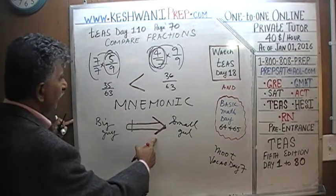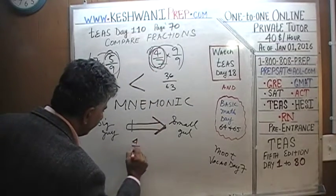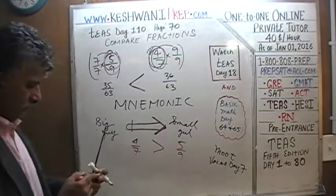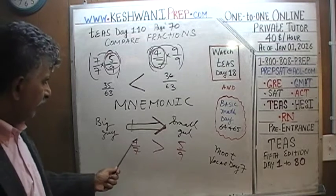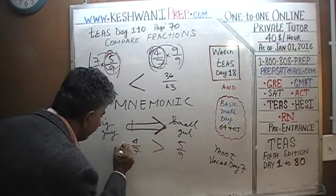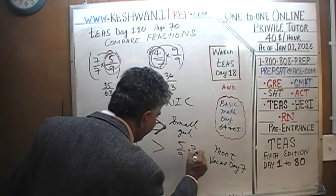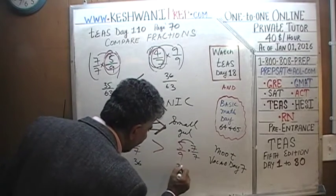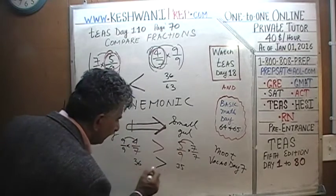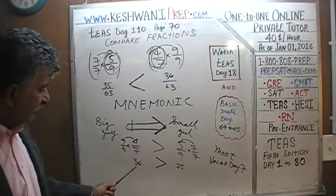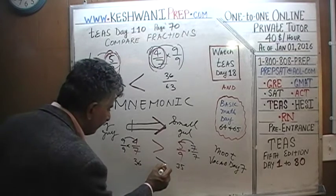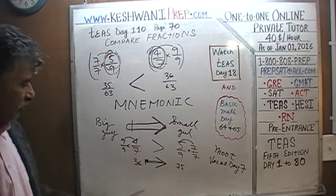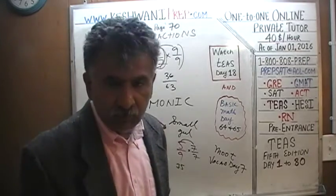So if you write four-sevenths, which gave us 36, is bigger than five-ninths, which gave us 35 — the symbol points from the larger number toward the smaller number. Thirty-six is being the bully, pointing the knife at poor thirty-five, because thirty-six is the big guy. It is always the big guy who tends to be the bully.